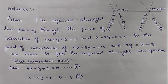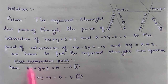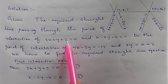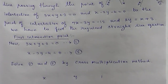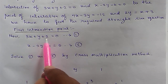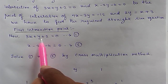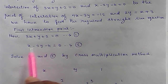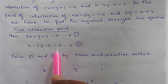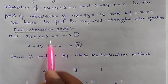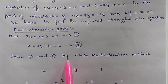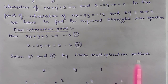To find the first intersection point, we solve equation 1: 3x + y + 2 = 0, and equation 2: x − 2y − 4 = 0, simultaneously using the cross multiplication method.